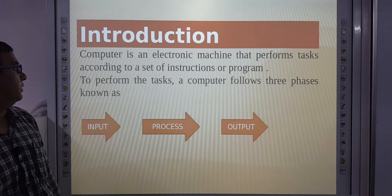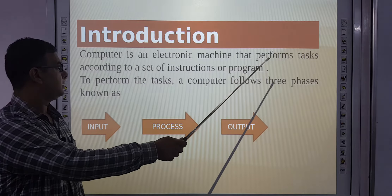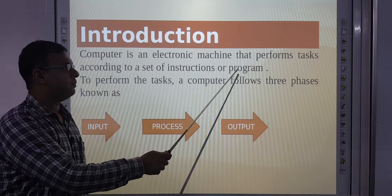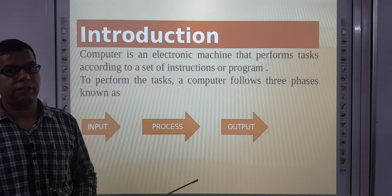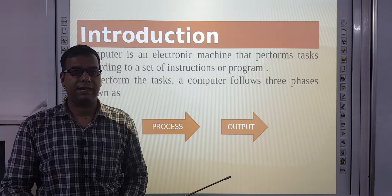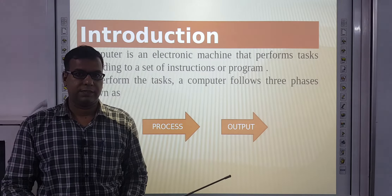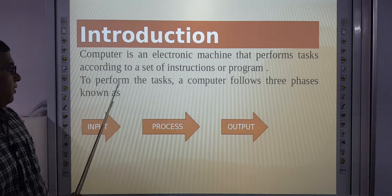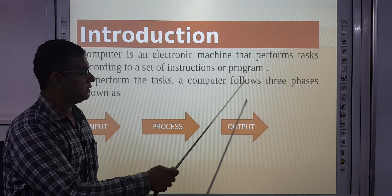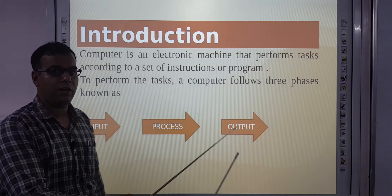Introduction: A computer is an electronic machine that performs tasks according to a set of instructions or programs. To perform a task, a computer follows three phases known as input, process, and output.